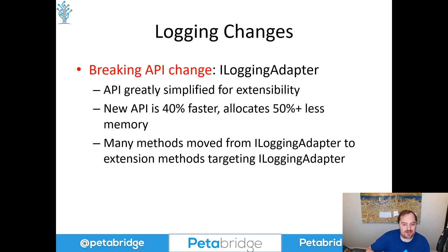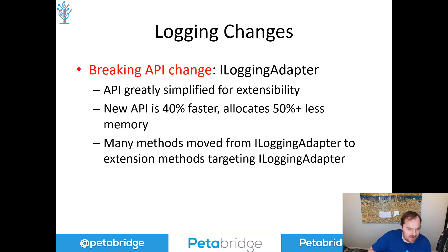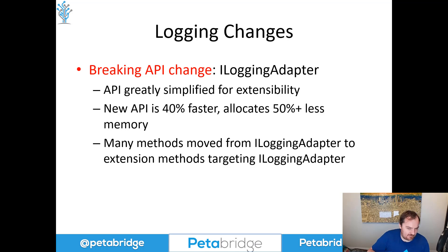Even when you didn't actually pass in any parameters, it would still allocate an array. On top of that, it performed a tremendous amount of boxing. So the greater the number of parameters, the more memory intensive the API became. We decided to break those old APIs, get rid of the params arguments, and replace them with a number of static methods targeting the new logging adapter interface — source compatible with the old params argument for up to six distinct parameters — but with no boxing and no array allocation.